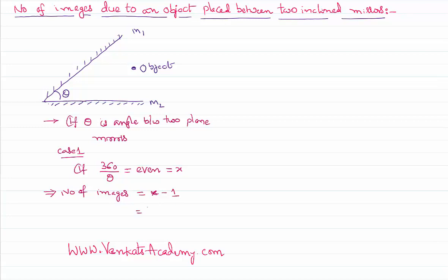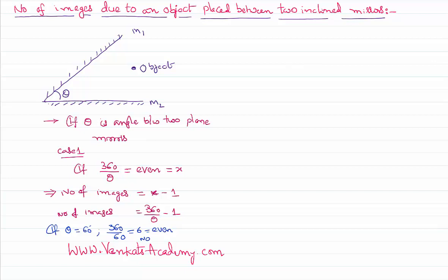In other words, the number of images is (360/θ) minus 1. For example, if the angle between the two plane mirrors is 60 degrees, then 360 divided by 60 equals 6, which is an even number, so the number of images formed is 6 minus 1, which equals 5 images.